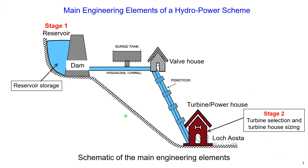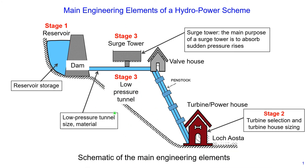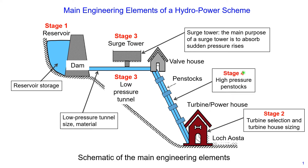For stage two you design the turbine house: the type of turbine, how many turbines, the size of each turbine, and based on this information you design the turbine house size. In stage three you design the low-pressure tunnel and a surge tower, calculating size and material for the tunnel and sizing for the surge tower. Its main purpose is to absorb sudden pressure rises when you close the valve. Stage four involves calculating high-pressure penstocks — their size, number, and material.